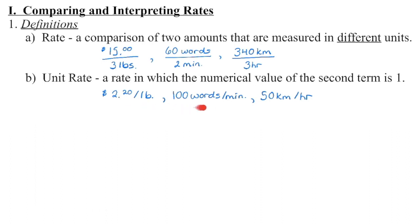These second three examples are what we consider a unit rate, where the second term is one. An item that we purchase might cost $2.20 per pound. We might be able to type 100 words per minute, and we can drive 50 kilometers in one hour.